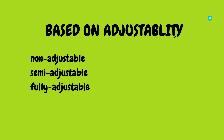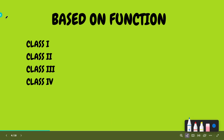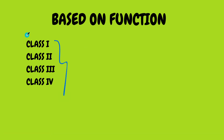Based on adjustability, the articulators can be non-adjustable, semi-adjustable, or fully adjustable. But based on function, they can be class 1 to 4. Class 1 and 2 are non-adjustable articulators, whereas class 3 is semi-adjustable and class 4 is fully adjustable.